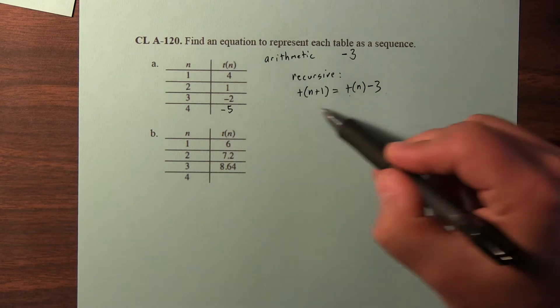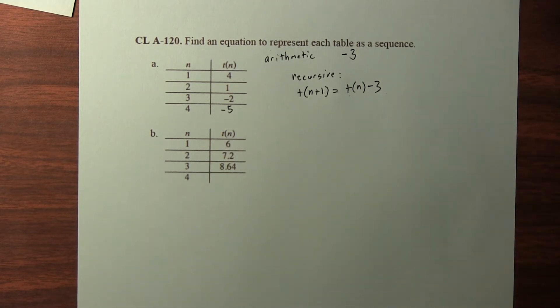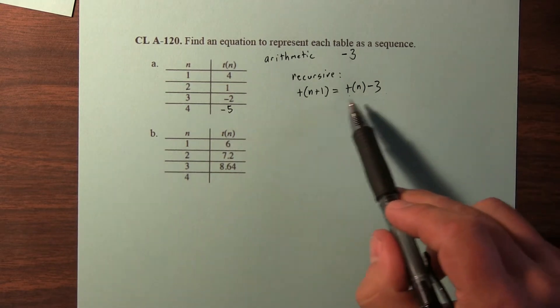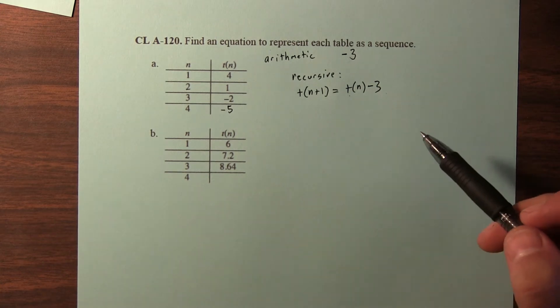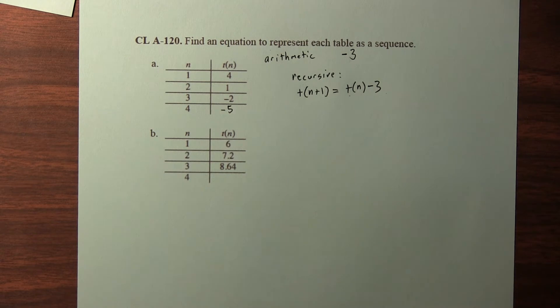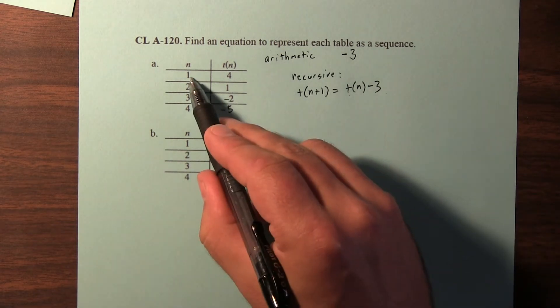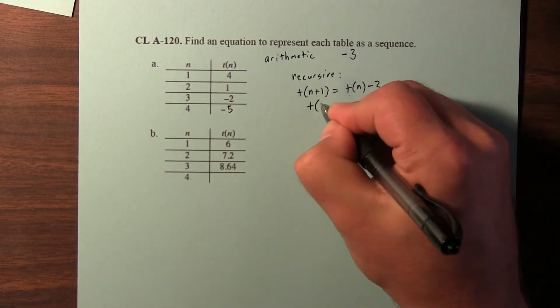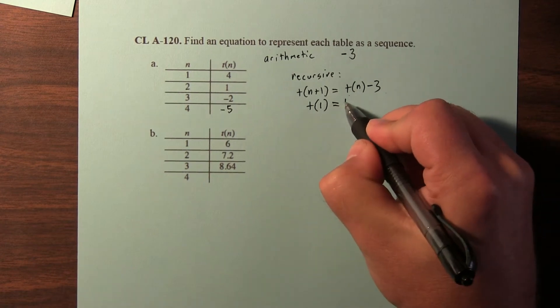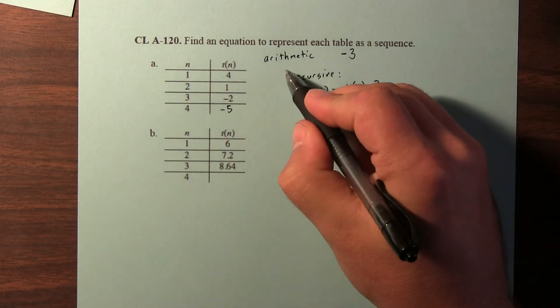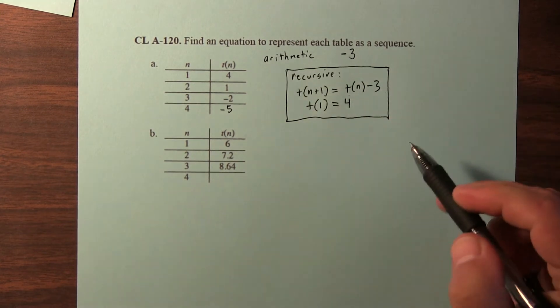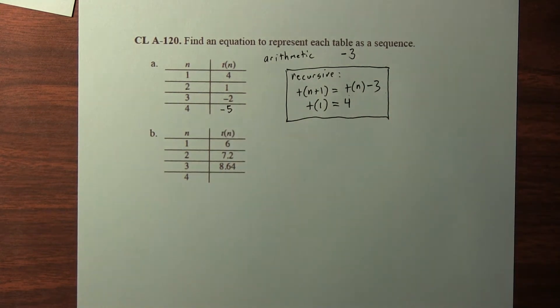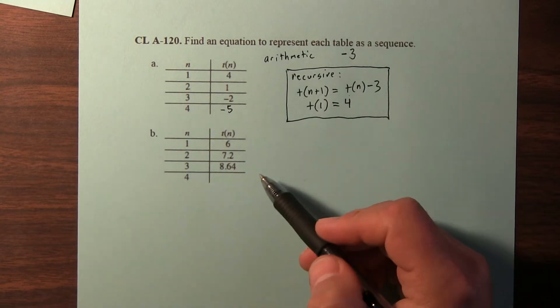Now when you write a recursive equation, you can't just give the equation. You have to give a starting term, because this would actually define a lot of different sequences. In fact, any sequence where each term decreases by 3. So let's give a starting term. The first term here is 4. So this pair of equations would be the recursive equation to represent this table as a sequence.